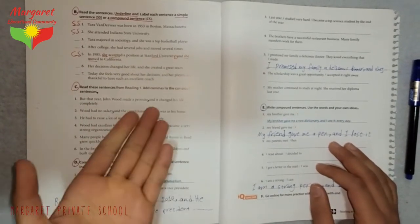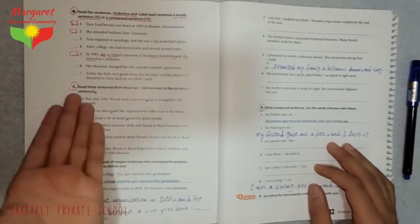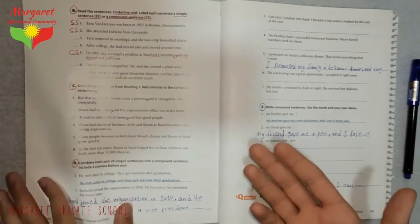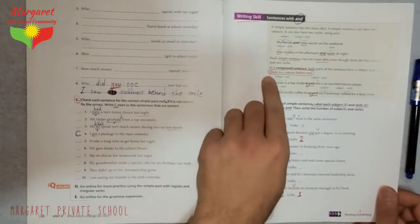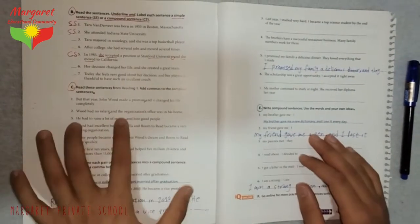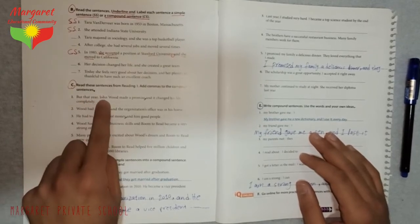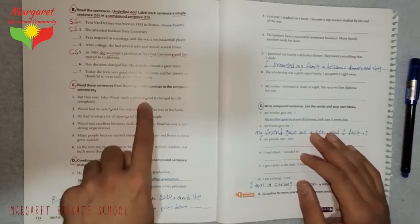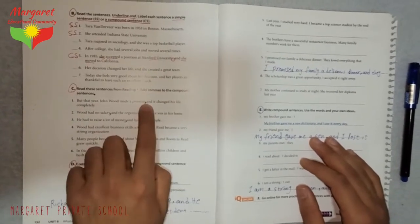Activity C. It says, read these sentences and add commas to the compound sentences. And we studied that as a rule. When you want to add a comma, you have to add the comma before 'and.' Number one, but that year, John Wood made a promise, comma, and it changed his life completely. Do you see the comma? Before 'and.'